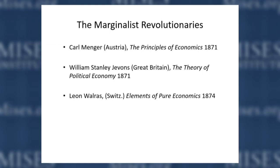At the time Menger didn't know there were others working along the same lines. One was William Stanley Jevons, who wrote The Theory of Political Economy in 1871 and also came up with a marginal utility approach to economics. Then there was Léon Walras, a French-Swiss economist who, a few years later, without having read the previous two books, also came up with an approach based on marginal utility.